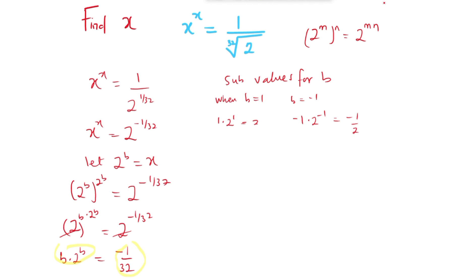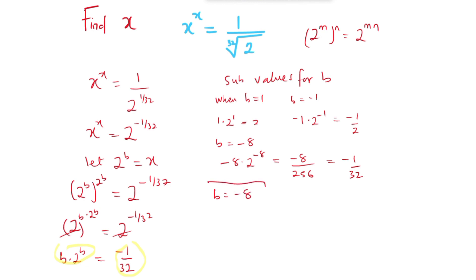We keep substituting values. If we substitute b equals negative 8, we get negative 8 multiplied by 2 raised to power negative 8, which is negative 8 over 2 raised to power 8, which is 256. Dividing that gives negative 1 over 32. So the value b equals negative 8 makes this equation true — the left-hand side and the right-hand side are equal.